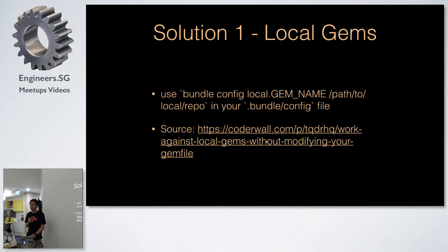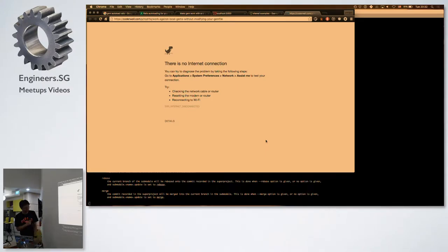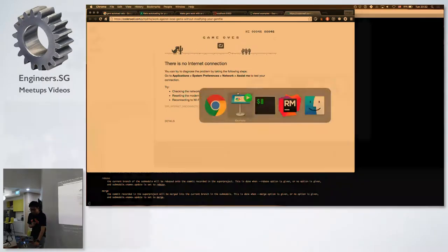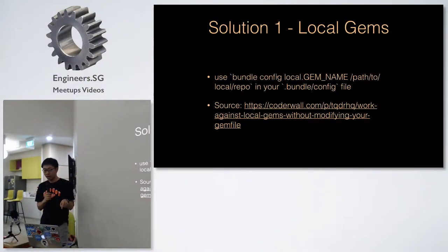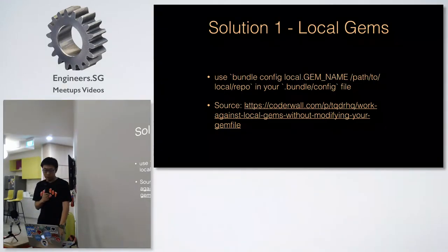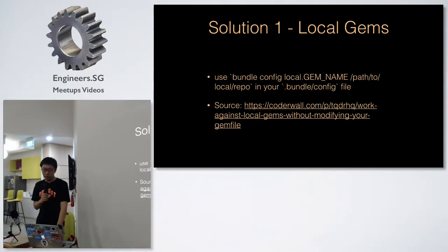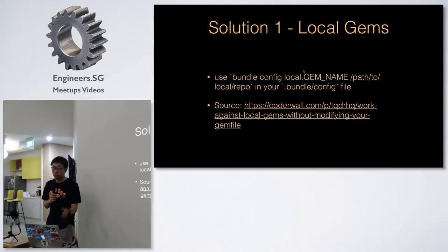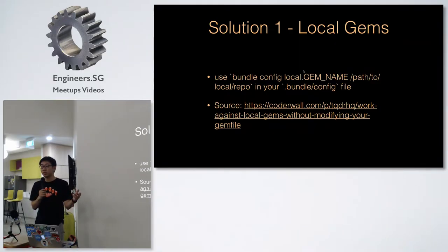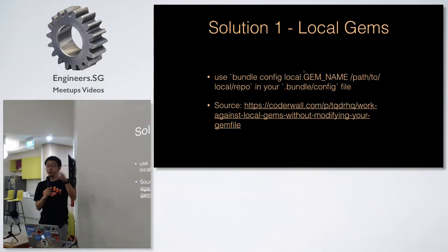So basically what it does is — I can't, oh no internet. Okay, I got no internet. I didn't prepare the demo so I'll just describe it. Basically what it does is you create a file called bundle/config and then you put what gem location you want to use for a certain gem. Basically when you load the app, it will use your local location instead of the gem from remote.